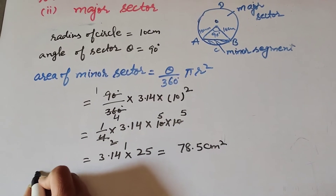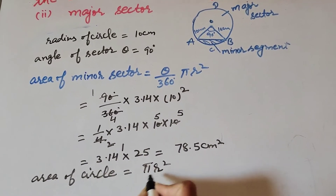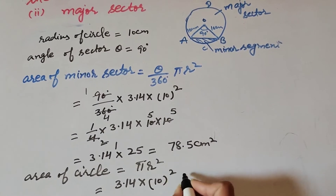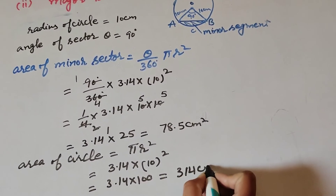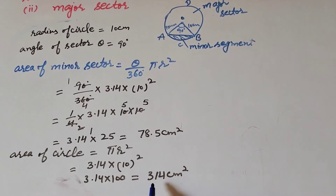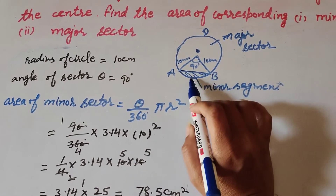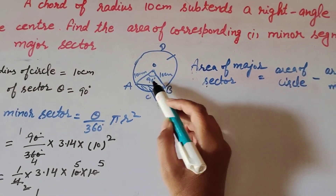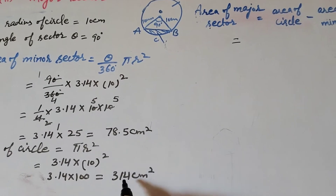Now to find the area of the major sector, first we find the area of the circle. Area of circle equals pi r squared, which is 3.14 multiplied by 10 squared, equals 3.14 multiplied by 100, equals 314 cm squared. Area of major sector OADB equals area of circle minus area of minor sector OACB.